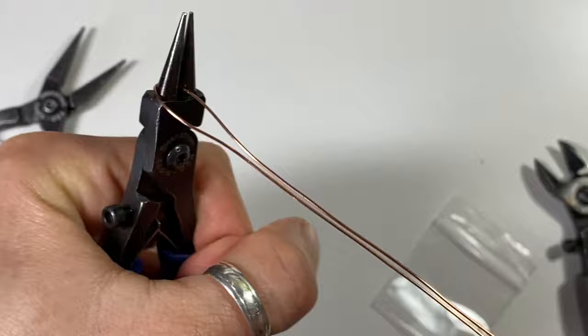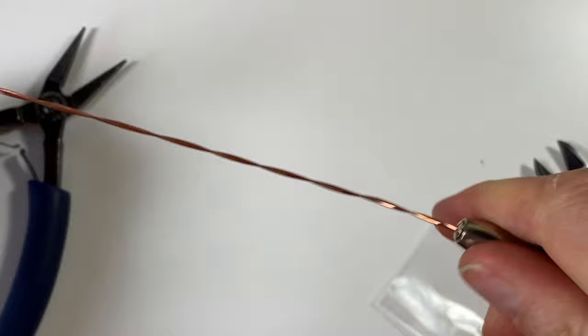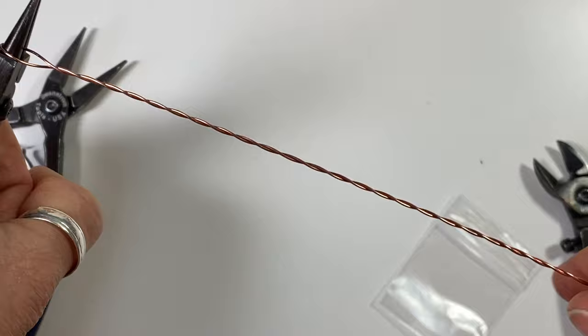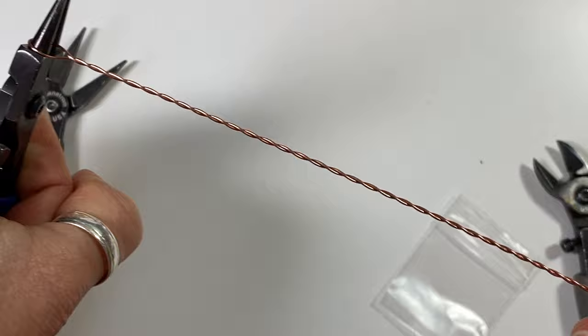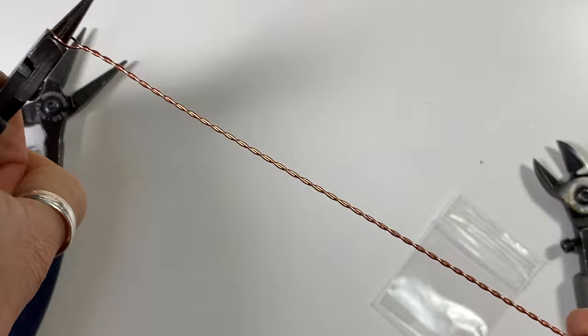And just start twisting your pin vise on the other end and keep it nice and taut. Try to get a nice even bead.